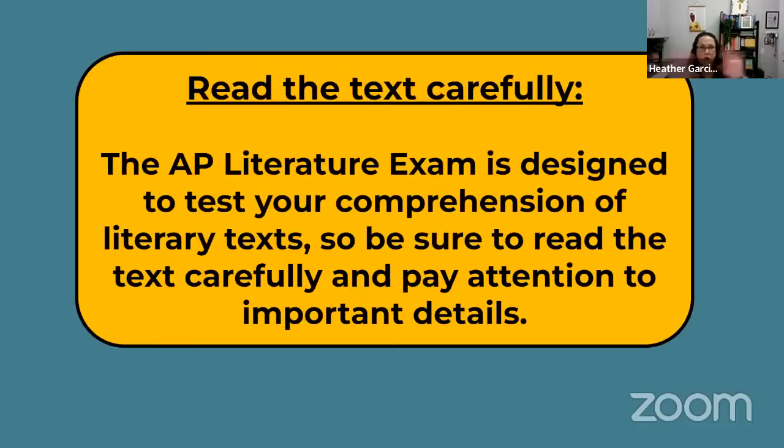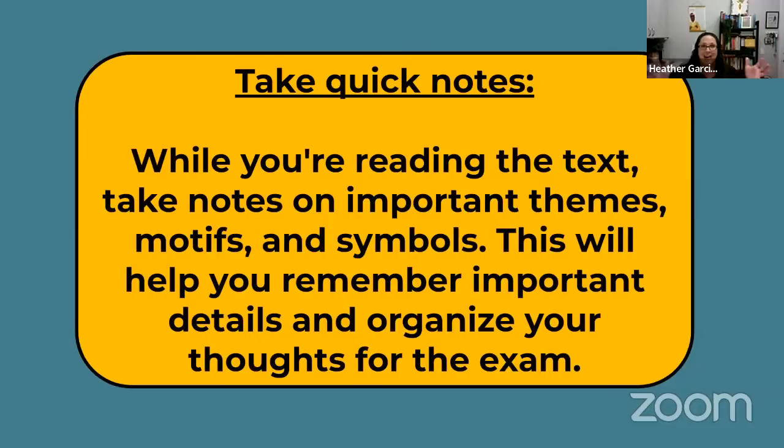Take some quick notes. The joy of this AP test is that you can annotate. You're going to have paper, a pencil, and a pen for the essay portions. You can underline, circle, put stars. If you're finding a symbol, put a big S beside it and keep going — that will help you remember where those important details are. Interacting with the text keeps you accountable and gives you quick reference points to go back to.